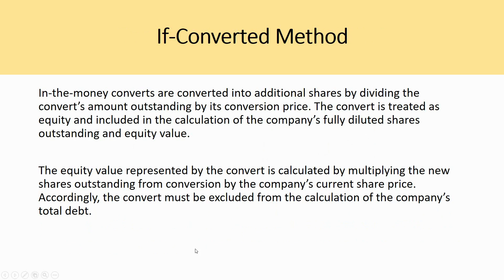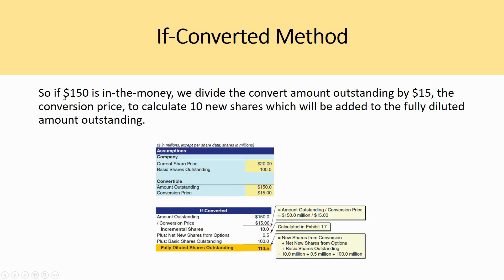For the if-converted method, in-the-money convertible securities are converted into additional shares by dividing the converts amount outstanding by the conversion price. The convert is treated as equity and included in the fully diluted shares outstanding and equity value calculation, while the convert must be excluded from the calculation of total debt. For example, if there are $150 of in-the-money converts with a conversion price of $15, you divide $150 by $15 to get 10 incremental new shares, which are added to the fully diluted share count.